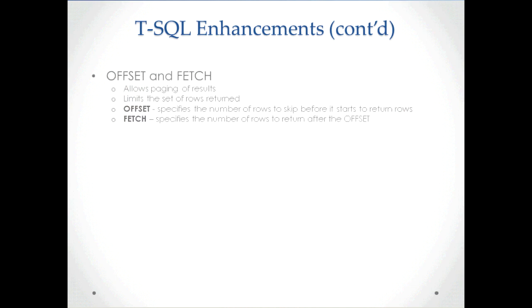Another addition is OFFSET and FETCH, which are additions to the ORDER BY clause in your SELECT statement. It allows you to fetch a page of results or a subset of results from the result set. The OFFSET clause specifies the number of rows to skip before it starts returning rows, and the FETCH clause specifies the number of rows to return after the offset is processed.